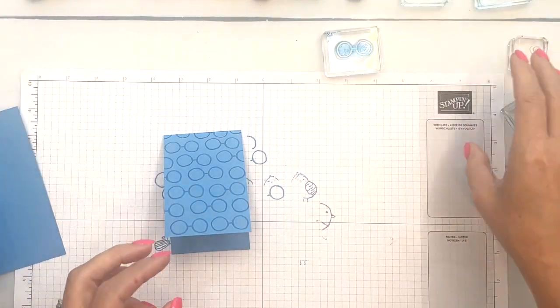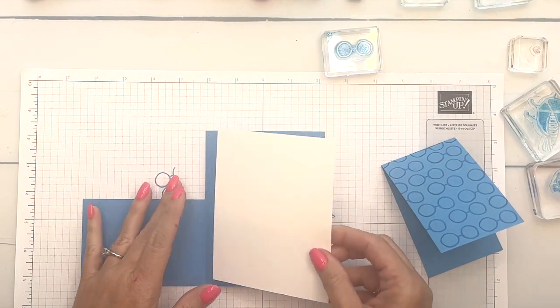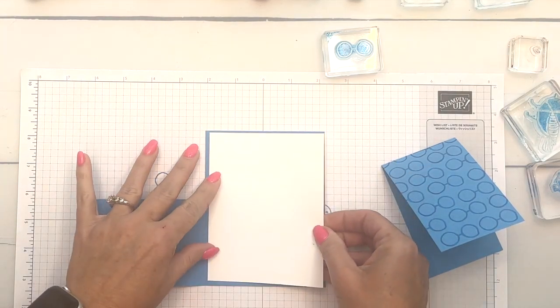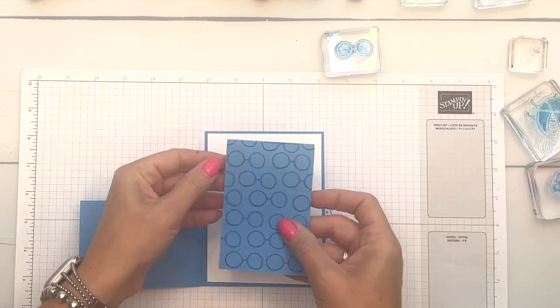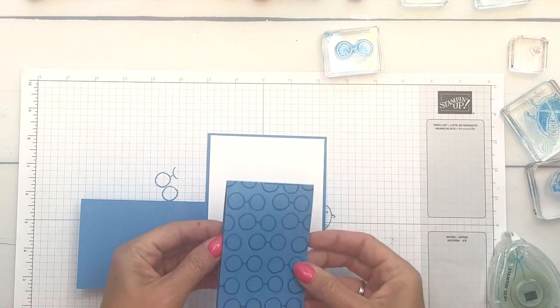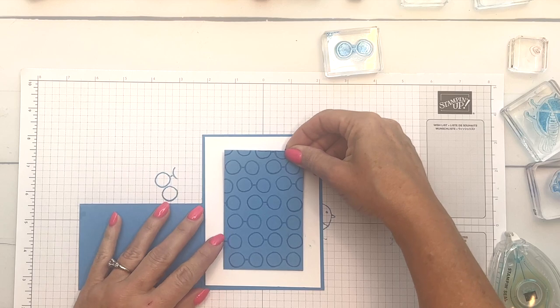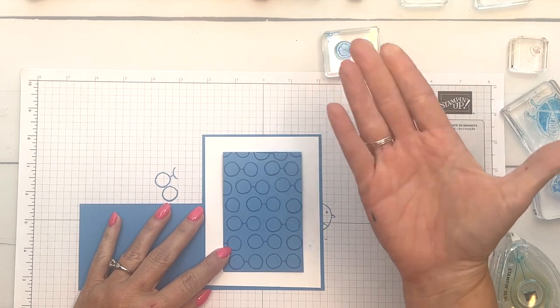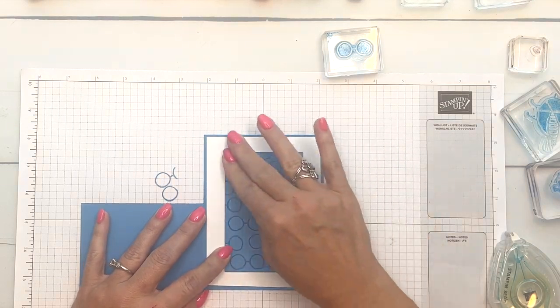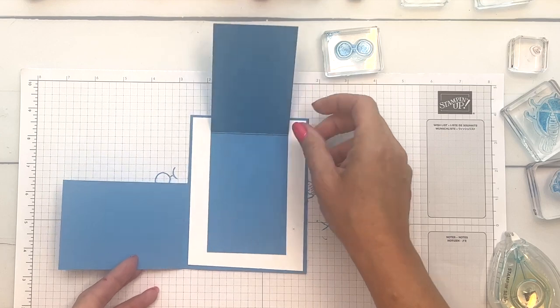My ink pad is super juicy. I've got a piece of Basic White and I'm going to stick that right in here in the middle. Then I'm going to take this card front, put adhesive on the back, and center it. This is always where I struggle to get it on straight. I made another smudge. I need to dejuicify my pad.